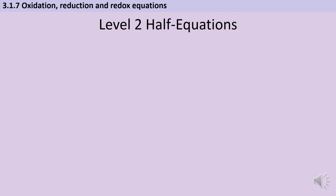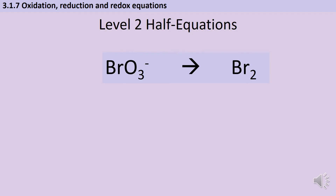Those examples of half equations were quite straightforward because all you really need to do is look at the charges and add the right number of electrons to make them balance, maybe with a little bit of balancing if you're going between ions and molecules. But at A-level we're going to start to meet more complicated scenarios like this one. I've now got a bromate ion changing into a bromine molecule. You can see straight away you'll need two bromate ions on the left hand side, plus you've got some oxygen to worry about.